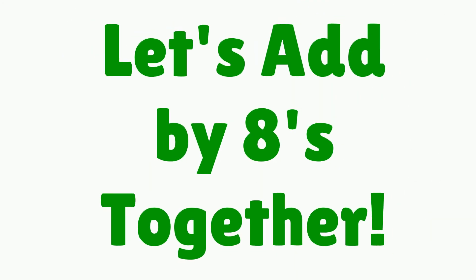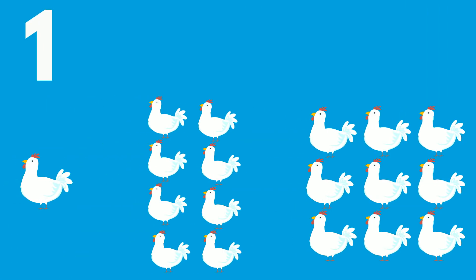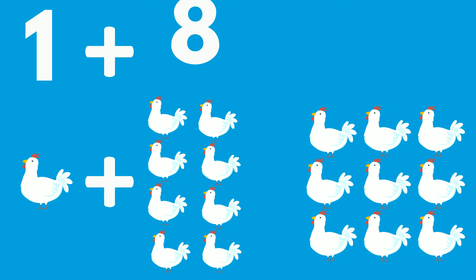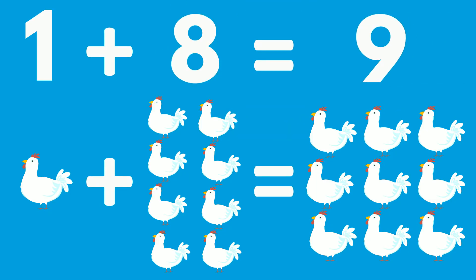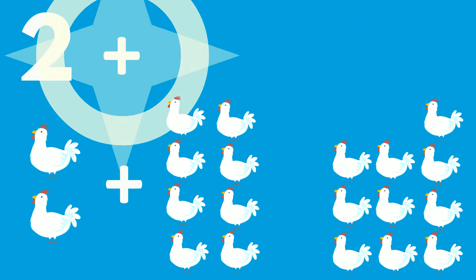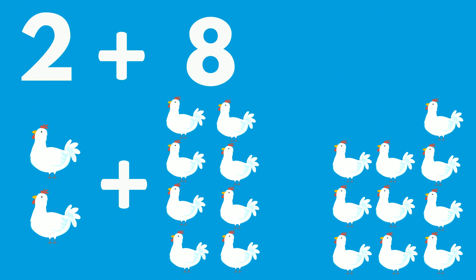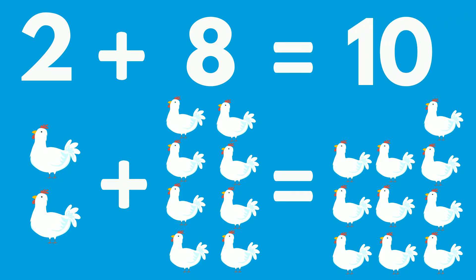Let's add by 8's together. 1 chicken plus 8 chickens equals 9 chickens. 2 chickens plus 8 chickens equals 10 chickens.